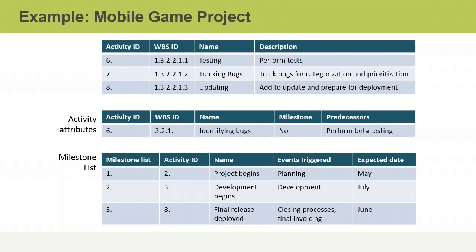Let's use a very simplified scenario to see how milestones might be used on a project. You're managing a project to create a mobile game. In the activity list, you record and describe the activities required for quality control. The first few activities relate to testing, tracking the bugs, and finally updating the code through patches or updates. The activity attributes form indicates that identifying the bugs is not a milestone — it's just one part of the work.